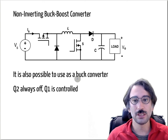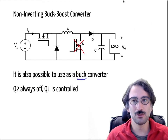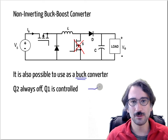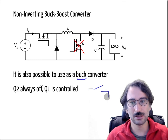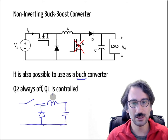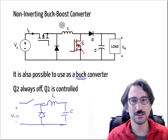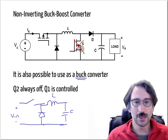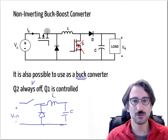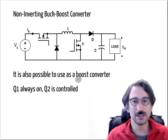This topology is also quite flexible — it can be used as a buck converter. If you disable Q2 and look at the topology, it becomes identical to a buck converter: you have the switch, the input, the diode, and the inductor. By disabling Q2 completely and controlling D1, you suddenly have a buck converter.